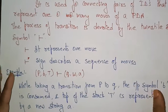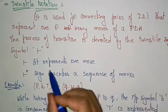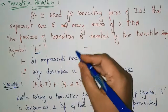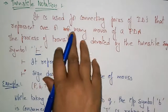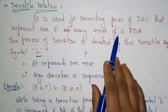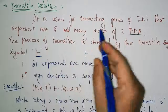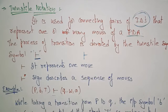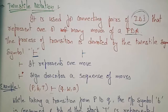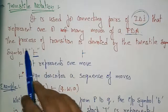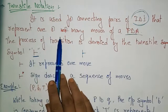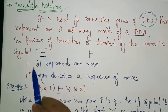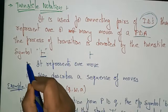The next terminology is the turnstile notation. It is represented like a T rotated, and you call it a turnstile. It is used for connecting pairs of IDs that represent one or many moves of a PDA. So the turnstile notation connects two IDs — whenever two IDs need to be connected, this turnstile notation is used. The process of transition is denoted by the turnstile symbol.